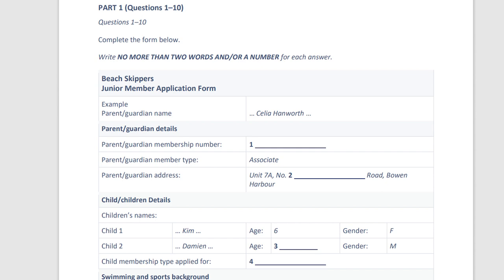Are you still at the same address? No. Actually, we've moved. We're now at Unit 7A, number 835, New Market Road, Bowen Harbour. Oh, yeah. I know it. That's the new apartment building, isn't it? Number 835, you said? Yes. I work at New Market Business Park, so it's very convenient. Yes, it must be.